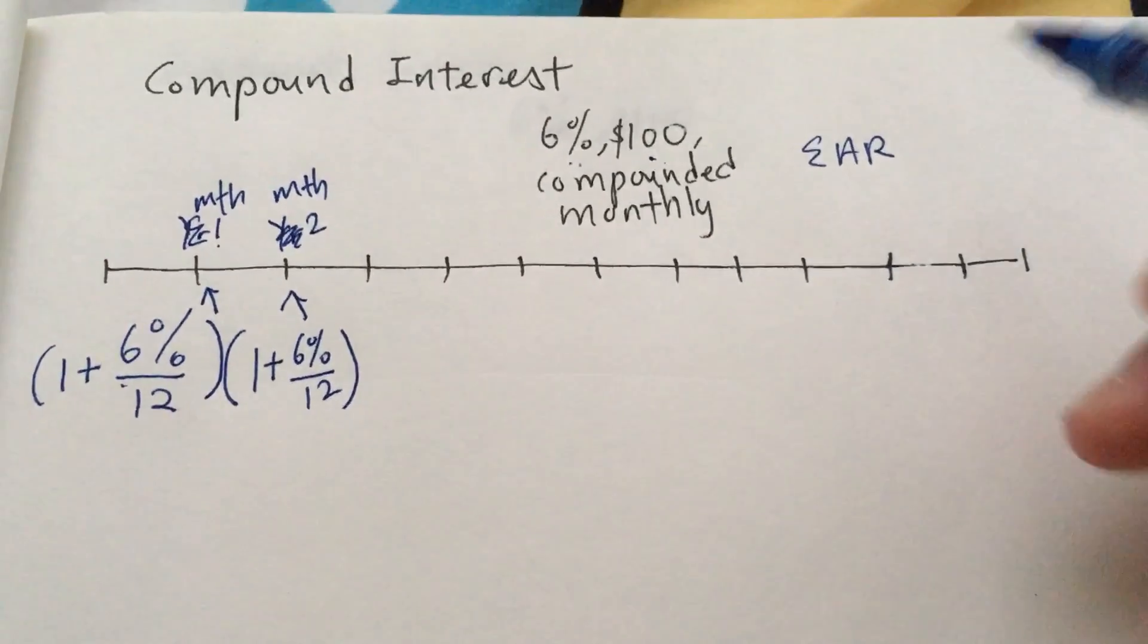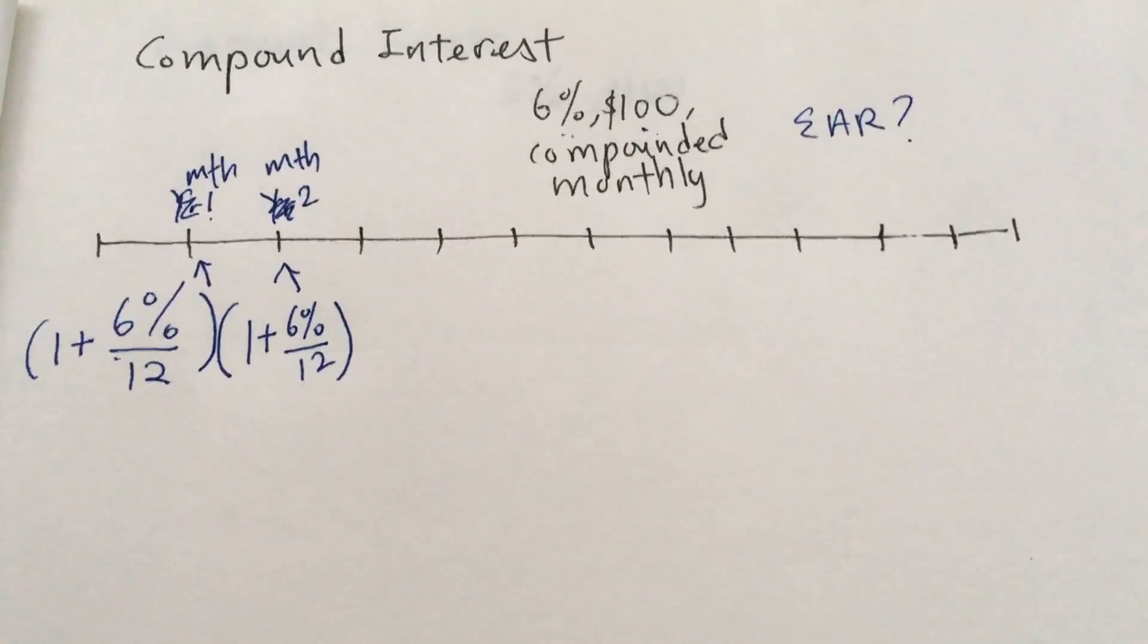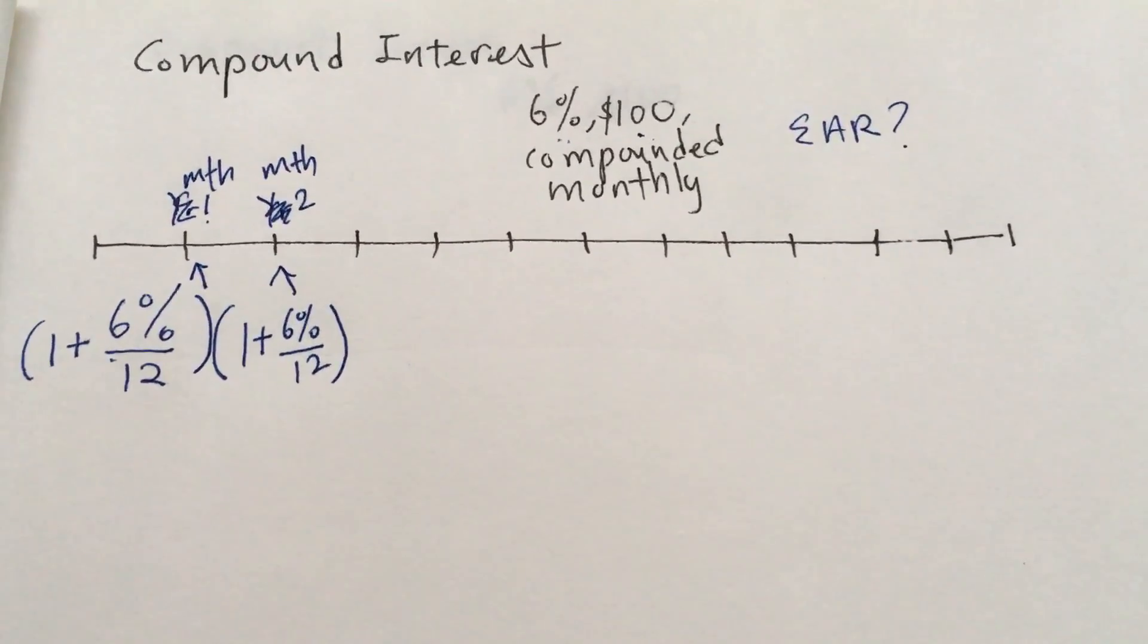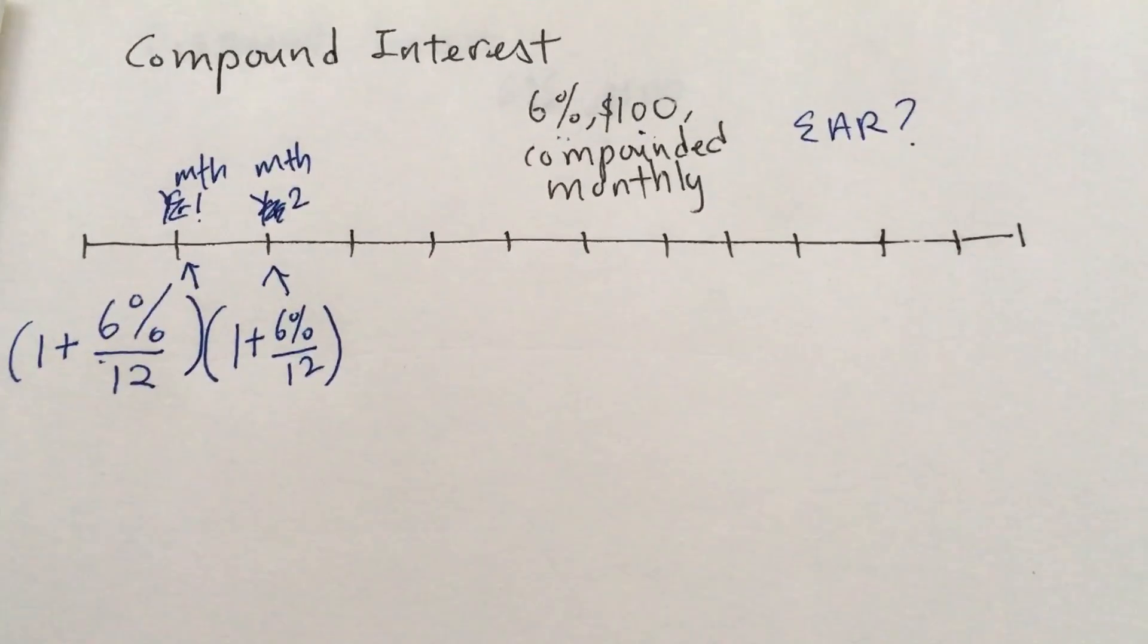How do we find what is the effective annual rate? If it's compounded monthly, we have to first figure out what is the monthly percentage or what is the monthly interest rate.